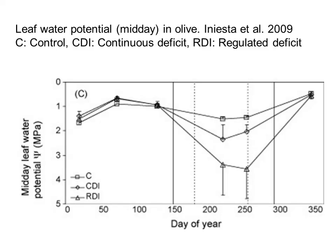Here we represent the time course during the year of midday leaf water potential for three different irrigated treatments in Córdoba, 2006. During winter and spring, the three treatments were equal. Then we have a control (well-irrigated trees), a continuous deficit irrigation applying the same reduced amount throughout the whole irrigated period, and a regulated deficit irrigation (RDI) which cuts more irrigation during summer and less in spring or autumn. As we cut irrigation during summer, the water potential goes to much more negative values.